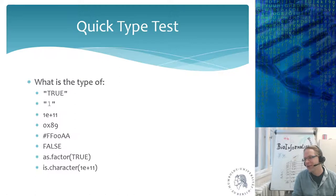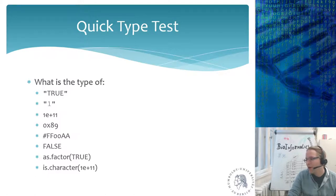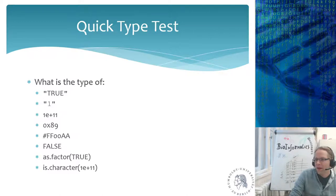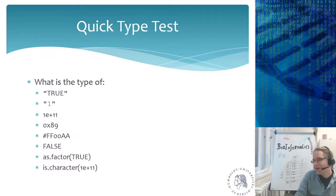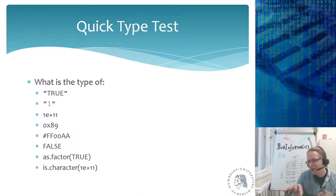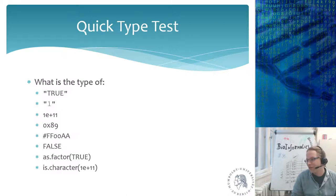The last expression: is.character(1e+11) — this is a logical value. 1e+11 is a numeric value, and we're asking is.character() of it — to which the answer is FALSE, it is not a character. So the entire statement is just FALSE, and the class of FALSE is logical. The is.* functions return a boolean yes or no answer, and a boolean is a logical value.